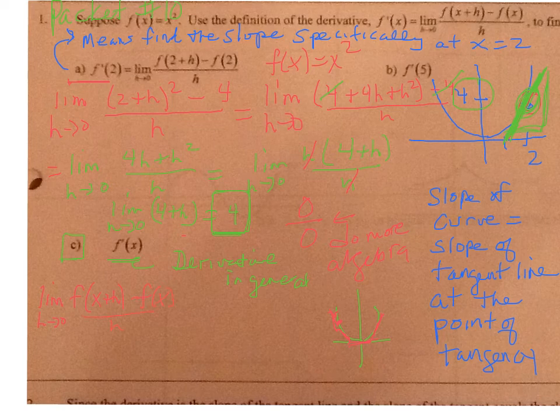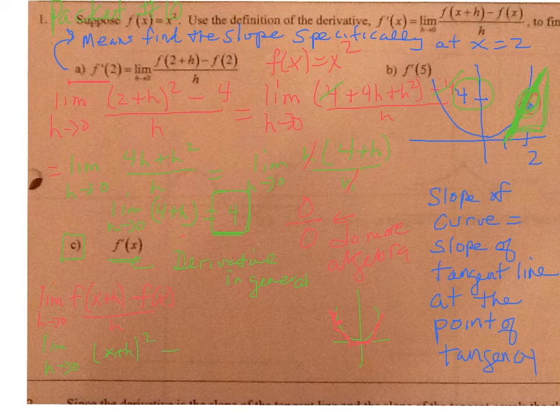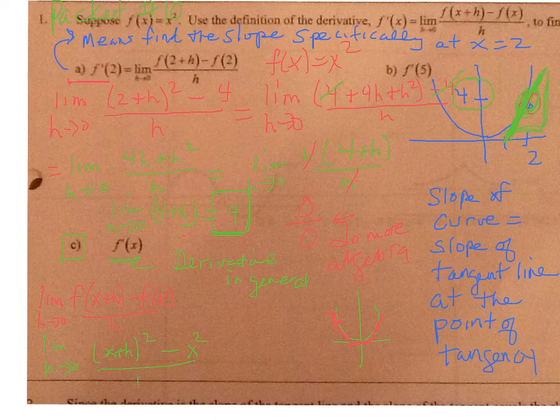So my limit as h goes to 0, my function is x squared, so x squared evaluated at x plus h is x plus h squared minus my function which is x squared, all over h.